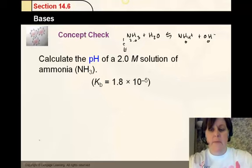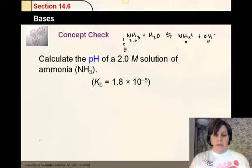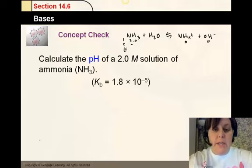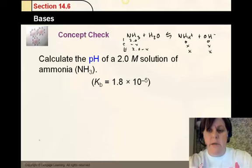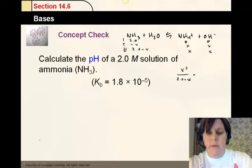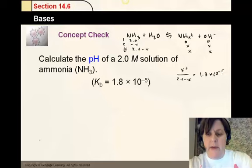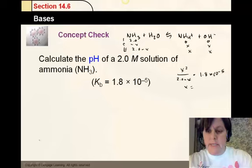But notice they give you the initial concentration of 2.0 molar. We don't have any concentration of products there. And we don't know the change. So the equilibrium concentration is 2 minus x, and the products are just x. When we work it out, we're going to get x squared over 2 minus x equals, in this case, 1.8 times 10 to the negative 5. When I solve for x, I got .006 molar.